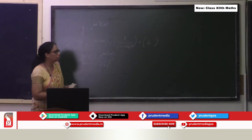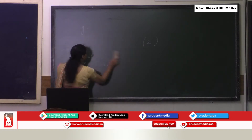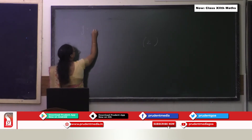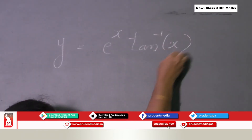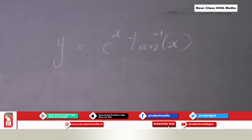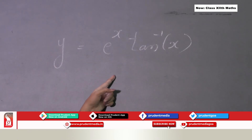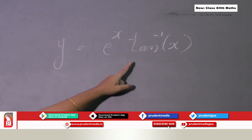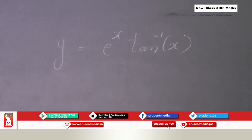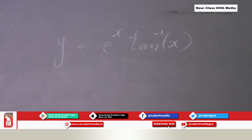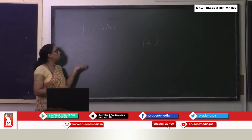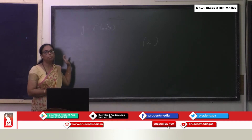Now try another important case: y equal to e^x multiplied by tan inverse of x. The form has changed — it is a product of two functions. Since it is a product form, I must use the product rule for differentiation.